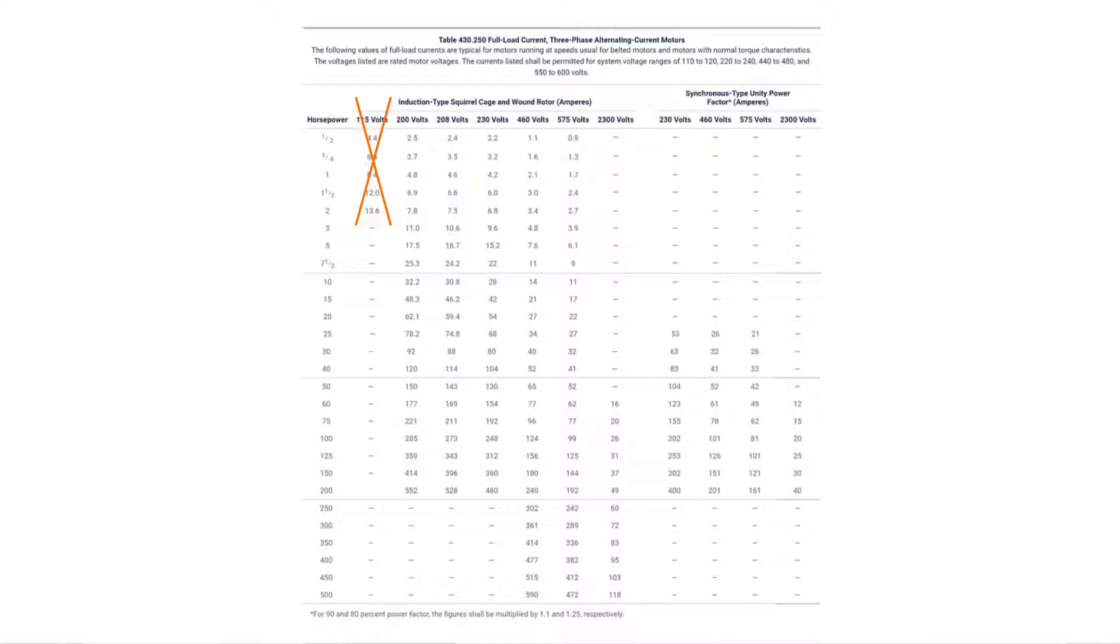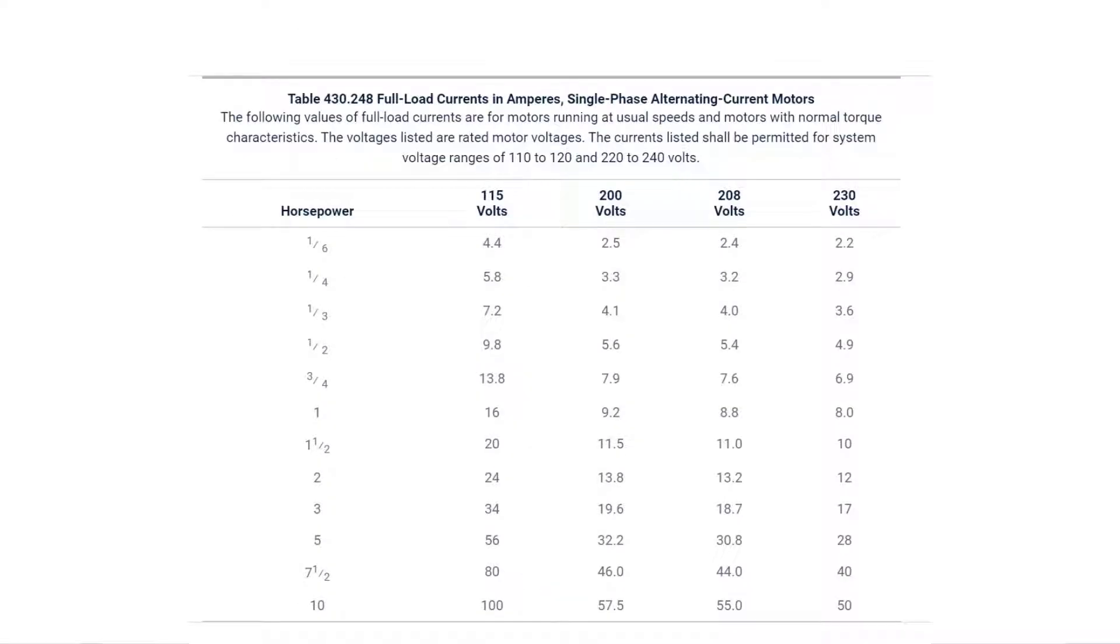And then I want you to look at the voltage ranges from left to right. Between the 460 and 575, I want you to do what I call a fence post. Straight line between to the right of the 460 voltage and to the left of 575, straight down. Make a line with your dark color highlighter. At the very top of this page where it says 430.250, I want you to write three-phase. That way you know this table is for three-phase. Over top of the 430.248 table, I want you to write single-phase. The 248 table is all about single-phase.